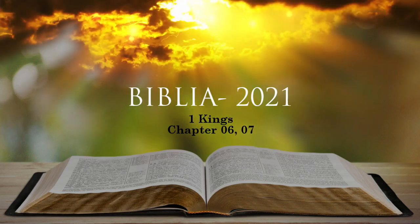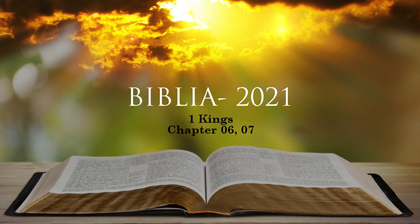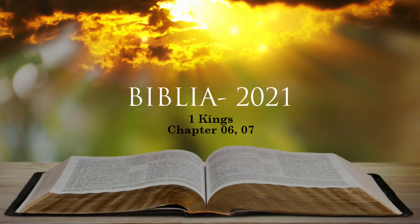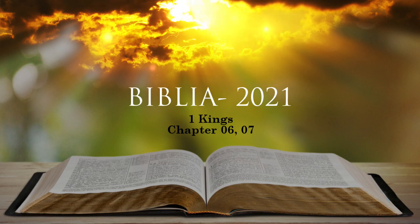1 Kings chapter 6. In the 480th year after the Israelites came out of Egypt, in the fourth year of Solomon's reign over Israel, in the month of Ziv, the second month, he began to build the temple of the Lord.